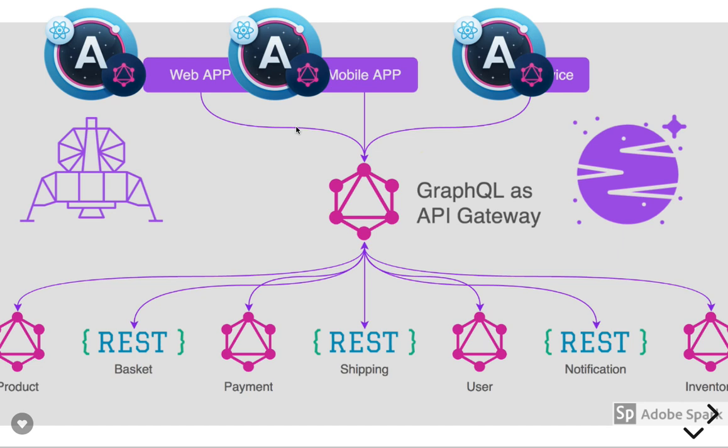GraphQL and REST are both best at their places. I'm not saying that with the introduction of GraphQL, REST is going anywhere — they will stay together. It depends on your need: whether you want to use GraphQL or REST. Both have their own advantages and disadvantages. But what about legacy services? Some services are in REST, some are getting data directly from the DB, and some are GraphQL APIs.